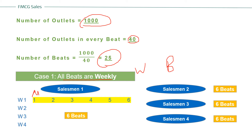There is still one more beat left since we need to cover 25 beats. With four salesmen covering 24 beats, we can either omit that one beat if its sales potential is not very good, or we can club it with an existing beat. So we require four salesmen for this case.